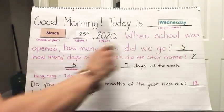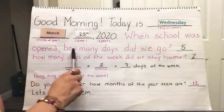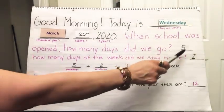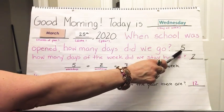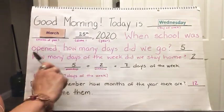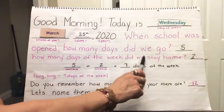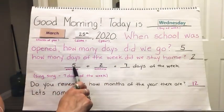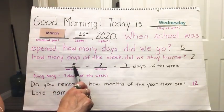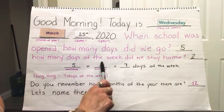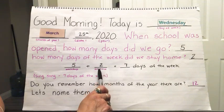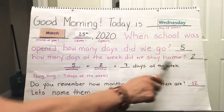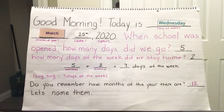When school was open, how many days did we go to school? That's right. We used to go five days a week. How many days of the week did we stay home? Two. Five days of the week — that's the weekdays — plus two weekend days equals seven days of the week.